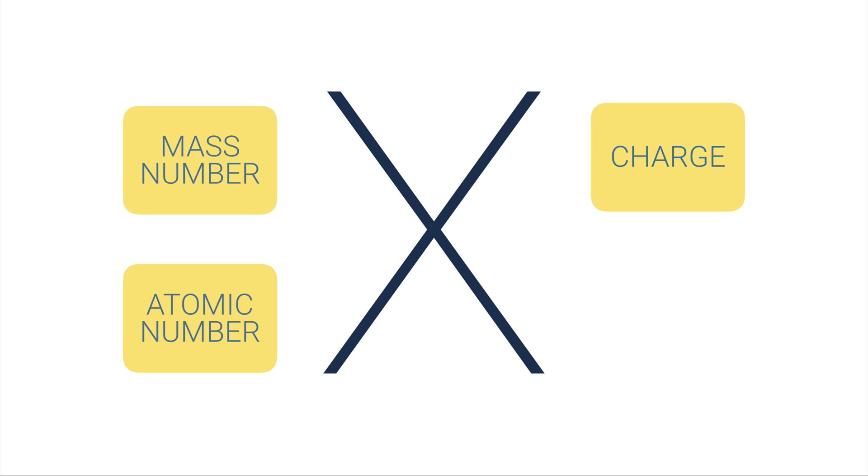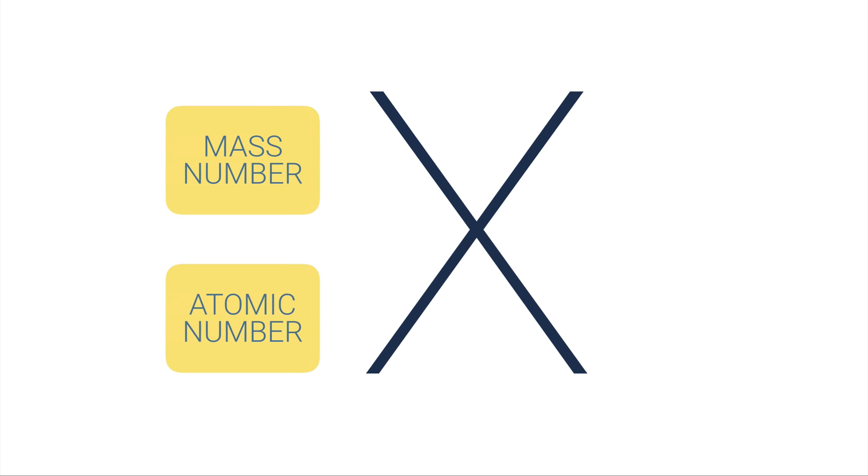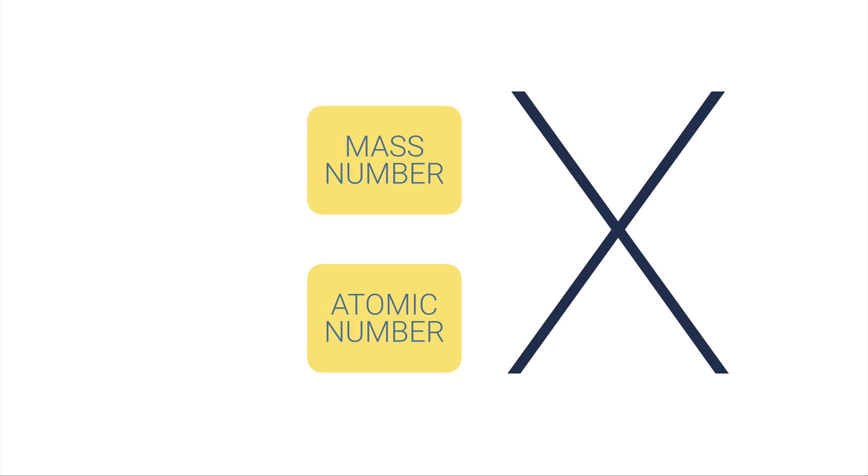So if we're looking at mass number in the upper left, atomic number in the lower left, and I just want to figure out how many neutrons are in an isotope, keep in mind the mass number is protons and neutrons together, atomic number is just the protons. So that means to figure out how many neutrons I have, I just subtract these two numbers. So I subtract the atomic number from the mass number.